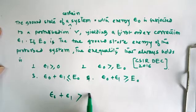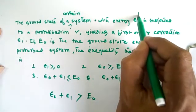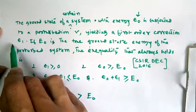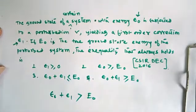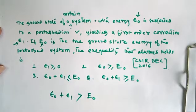In this question, E₀ is the zero-order correction and epsilon 1 is the first-order correction. Therefore, E₀ is the ground state energy of the perturbed system.